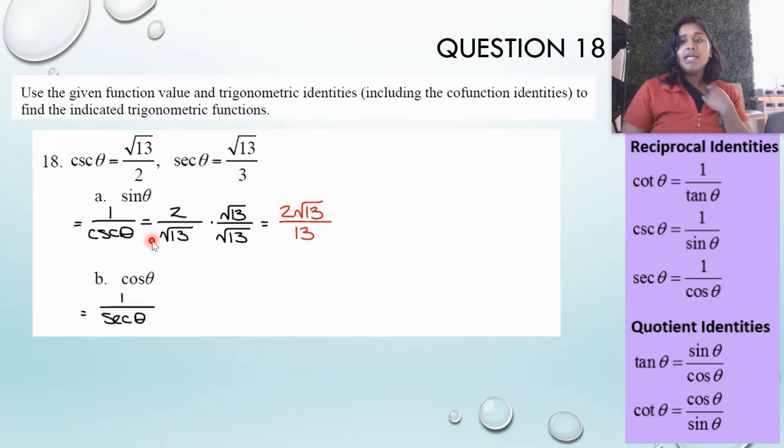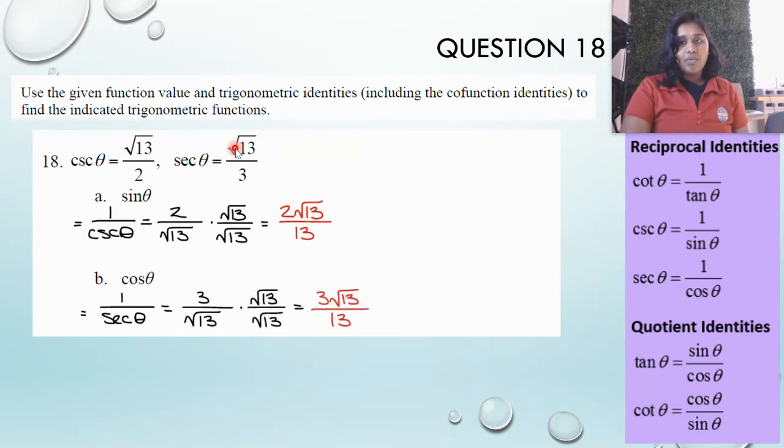Let's jump one more time to cosine. In cosine with my reciprocal identities, I noticed that it is the reciprocal of secant. So one over secant, or flipping this fraction right here, should give me my answer. There's my technical answer. However, we know that we like to rationalize. So there's our end answer.